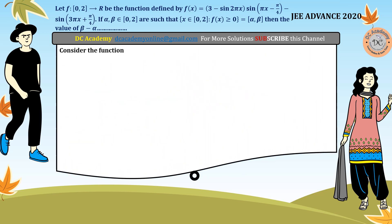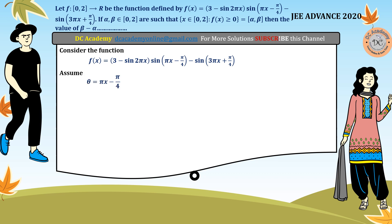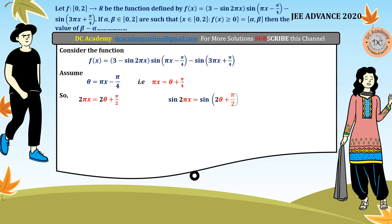We consider the function and assume that theta is equal to pi*x minus pi/4. Therefore pi*x equals theta plus pi/4, and 2*pi*x equals pi/2 plus 2*theta. Hence, sin(2*pi*x) equals sin(pi/2 + 2*theta), which by the complementary angle identity equals cos(2*theta).